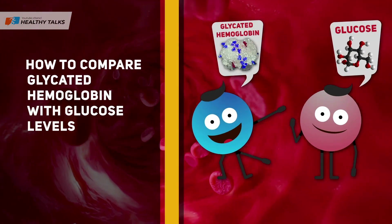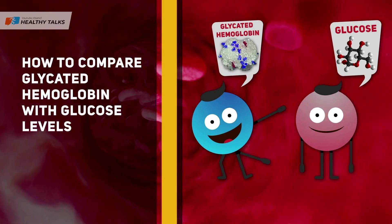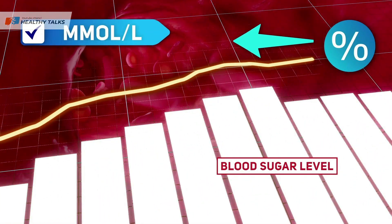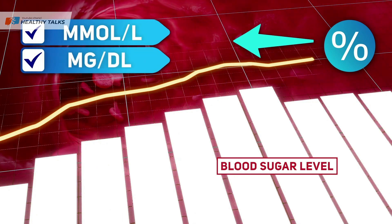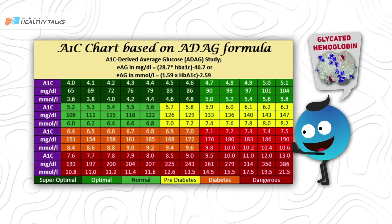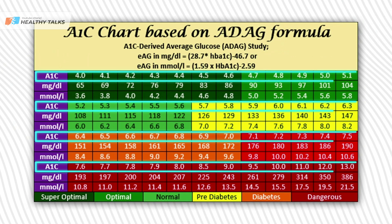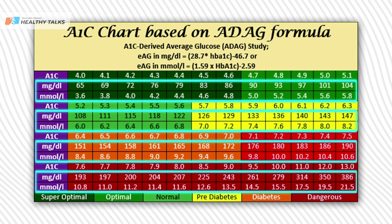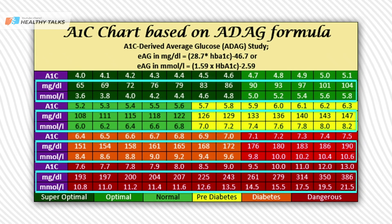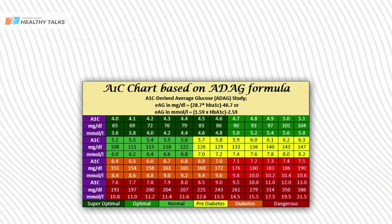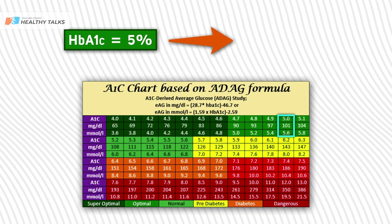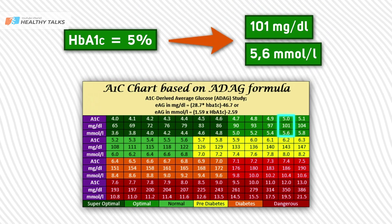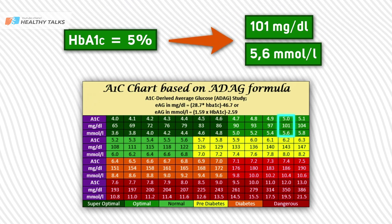If you are used to estimating your blood sugar levels in standard units — millimoles per liter or milligrams per deciliter — rather than in percentages, use this table. The glycated hemoglobin reading is labeled with the abbreviation HbA1c, and its corresponding mean glucose level is shown in the cells below. For example, if your HbA1c was 5%, it corresponds to a glucose level of 101 milligrams per deciliter or 5.6 millimoles per liter.